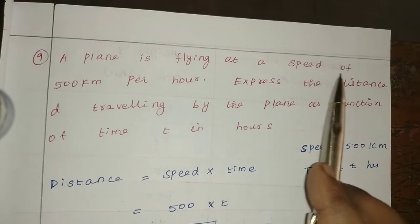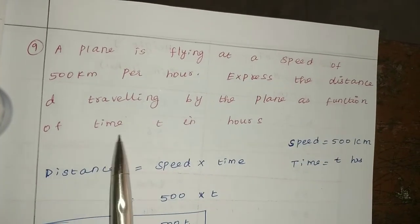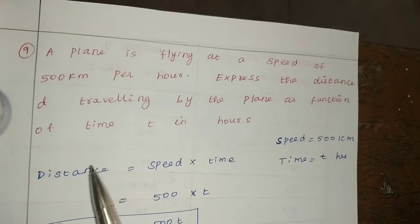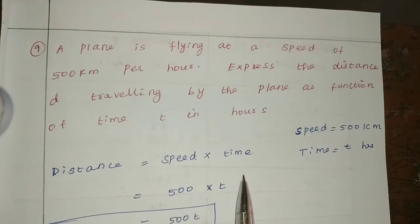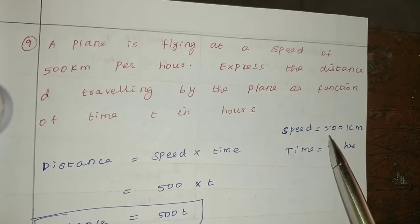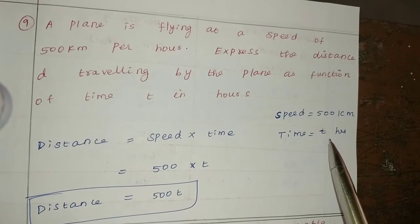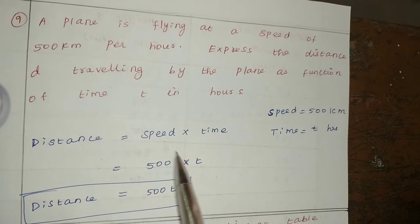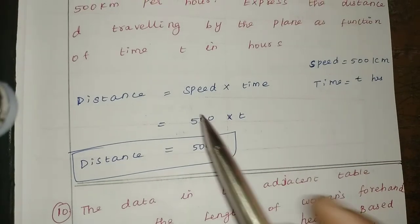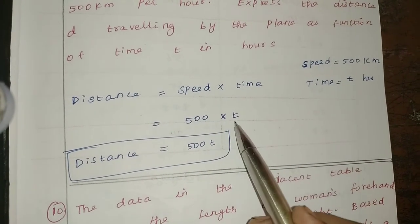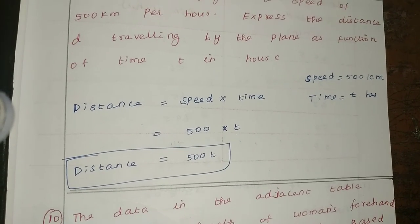Next problem: a plane is flying at a speed of 500 km per hour. Express the distance traveled by the plane as a function of time t in hours. Distance equals speed times time, so distance equals 500 times t, which is 500t.